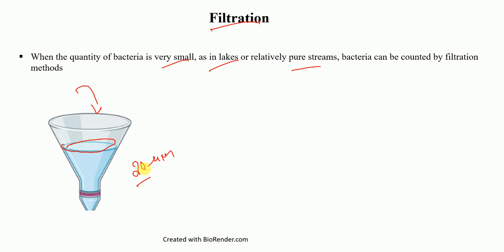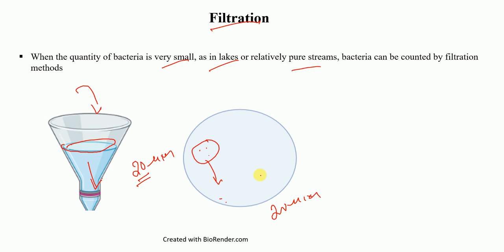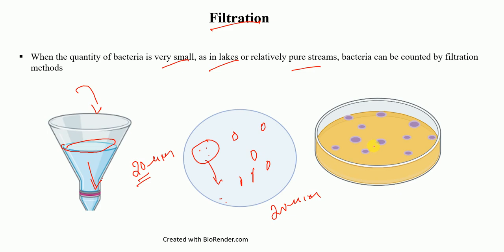For example, we can use a 0.2-micron membrane, meaning anything smaller than 0.2 microns will pass through, but anything larger will be retained on the membrane. The bacteria — being larger — will be retained on this membrane. Then in the next step, we simply place this membrane on an agar plate, incubate it, the bacteria will grow, and we will start to see colonies which we can count.